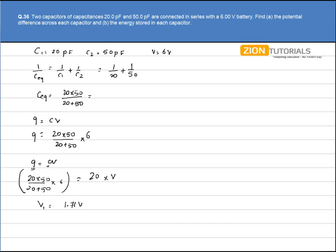Let's call it V1. Now to calculate the potential drop across 50pF, we use the concept that the net potential drop across two capacitors will be 6V. So potential drop across 50pF equals total voltage, 6V, minus potential drop across 20pF, 1.71V. That comes out to be 4.29V. That is the answer.